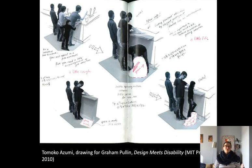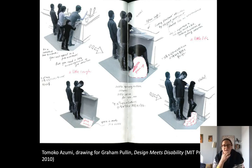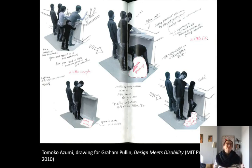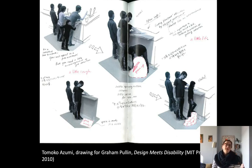In his book 'Design Meets Disability,' designer Graham Pullen noted these kinds of strategies and felt there was a need for more experimental, speculative approaches that could really get into the issues of disability without having to justify them as universal. In the book, he commissioned a number of designers to make imagined products — things they might not have been commissioned for and might not be able to afford to make — but that might address these issues.